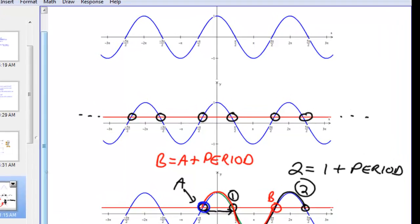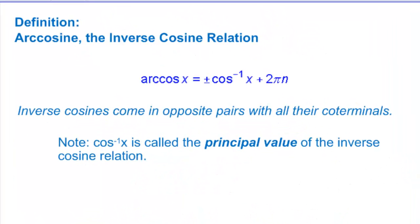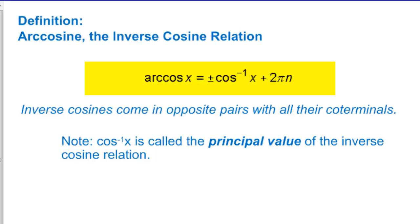In a nice, concise form, we have a formula that gives us exactly that relationship. This formula states that our infinite solutions, which we're going to call the arc cosine relationship,